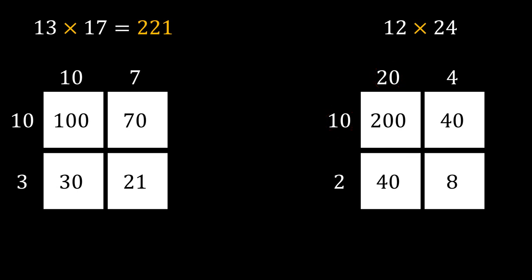So now we have multiplied all the 4 numbers separately. Now finding the sum of all of these numbers which is 288. So 12 times 24 equals 288.